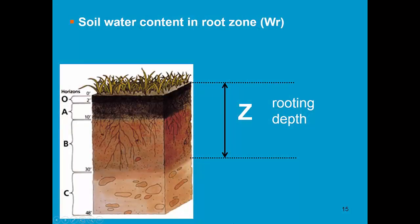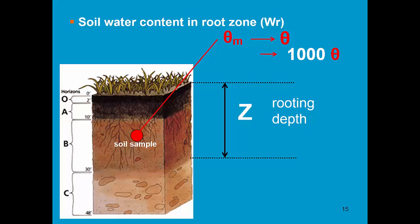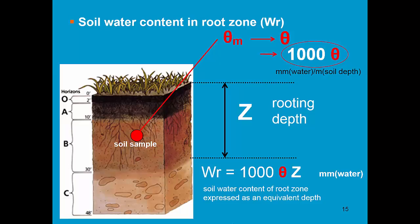Let us now compute the soil water content in the root zone. We go to the field, take a representative soil sample, determine the mass water content, multiply it with the bulk density to obtain the volumetric water content, and finally express it as an equivalent depth in millimeters of water per meter of soil depth. However, we have a rooting depth of only z meters. Consequently, the water content in the root zone is the equivalent depth — 1,000 times theta — times the rooting depth. The units are now millimeters of water.